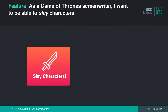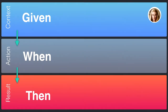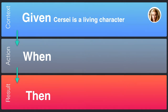As Cristina said, the first thing we are going to do for every feature is define who, what, and why. Who: the screenwriters of the show. What: slay characters. Why: because in every episode they need to slay a couple of characters. So the first thing I'm going to do is define the scenarios: slay a living character, don't allow to slay a dead character, and don't allow to slay the main character. Using the given/when/then keywords: given Cersei is a living character, when I slay Cersei, then Cersei is dead. Very simple.